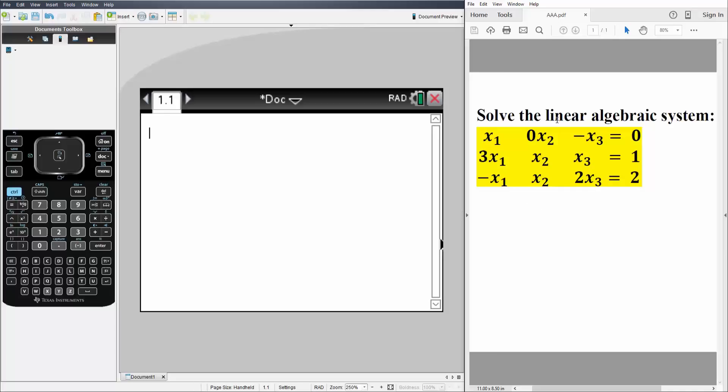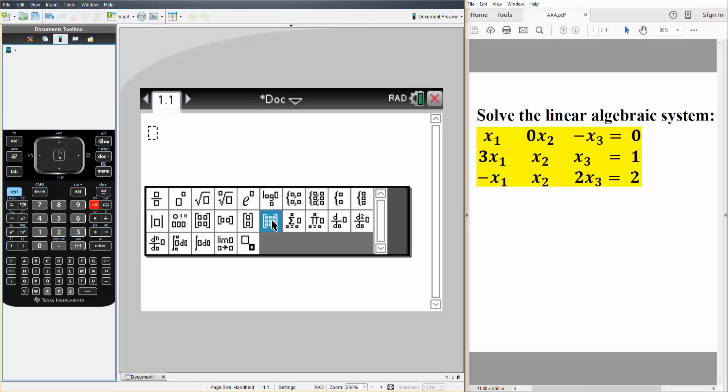Okay, in this video we want to solve the linear algebraic system using row reduced echelon form. We will hit this icon right here and we'll hit the three by three.